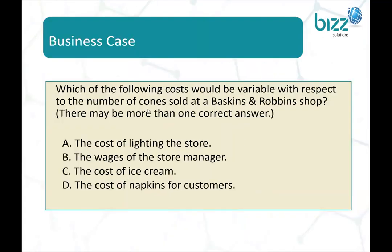We have also discussed variable cost and fixed cost. In the next video, I will solve the case: which of the following costs would be variable with respect to the number of sales in a Baskin-Robbins shop? We know that variable cost varies with output — one unit is one cost, two units is double, three units is triple.